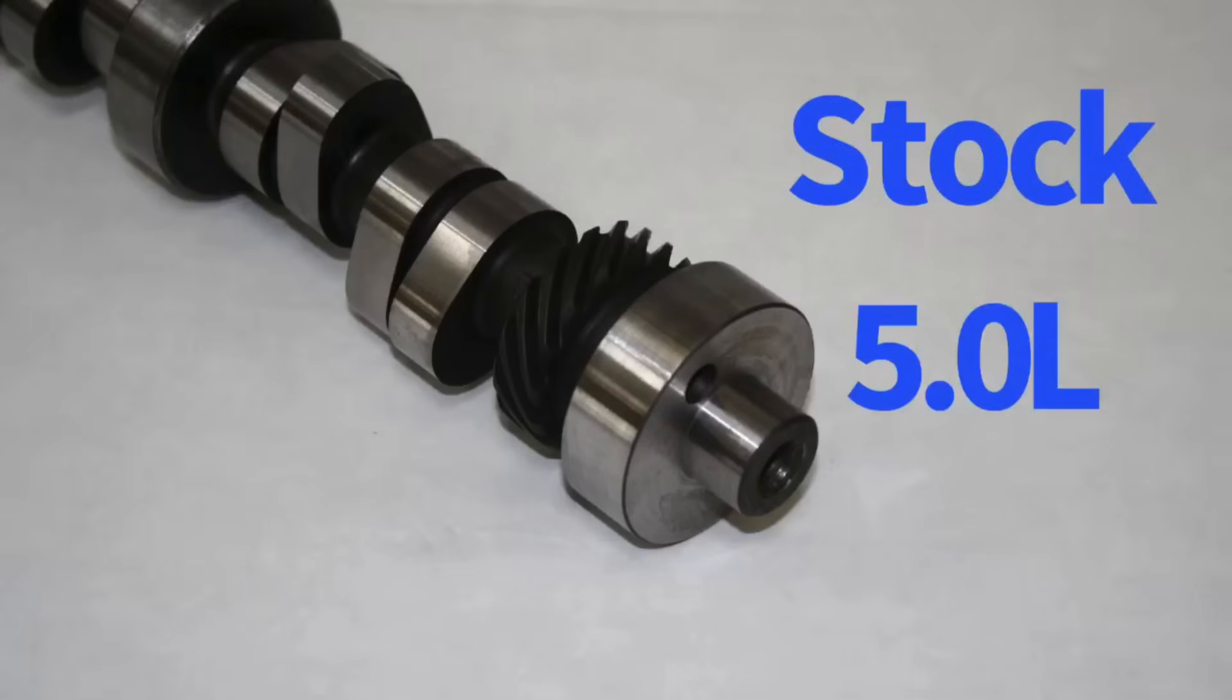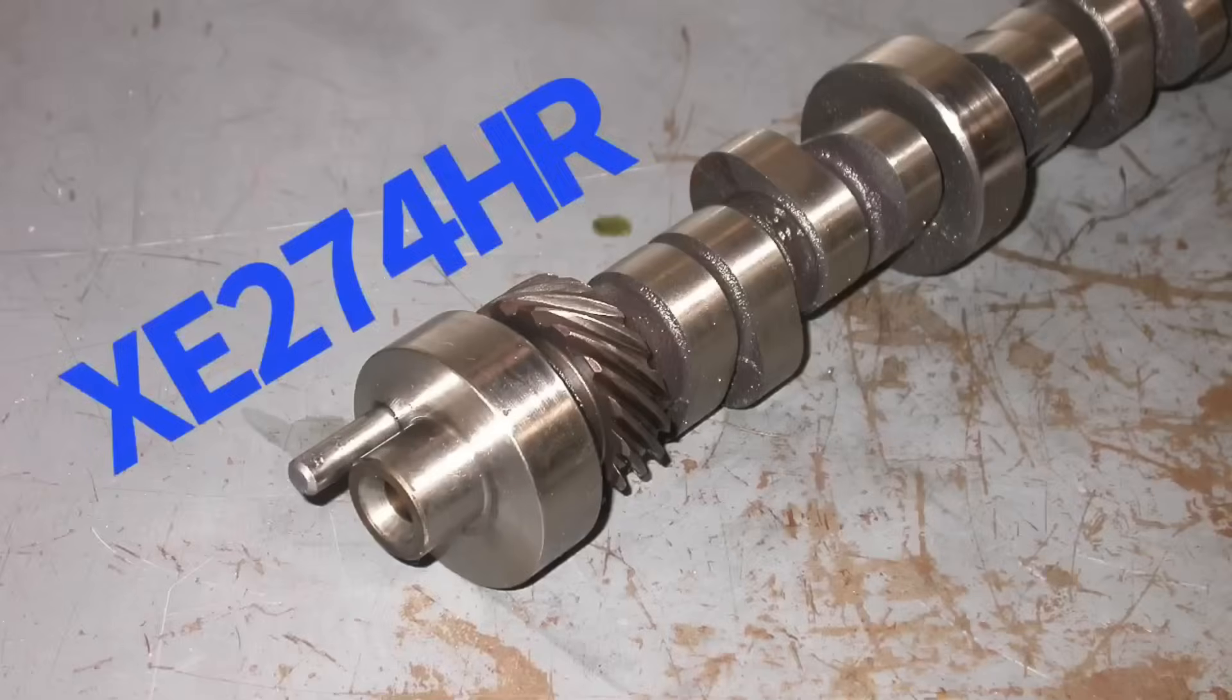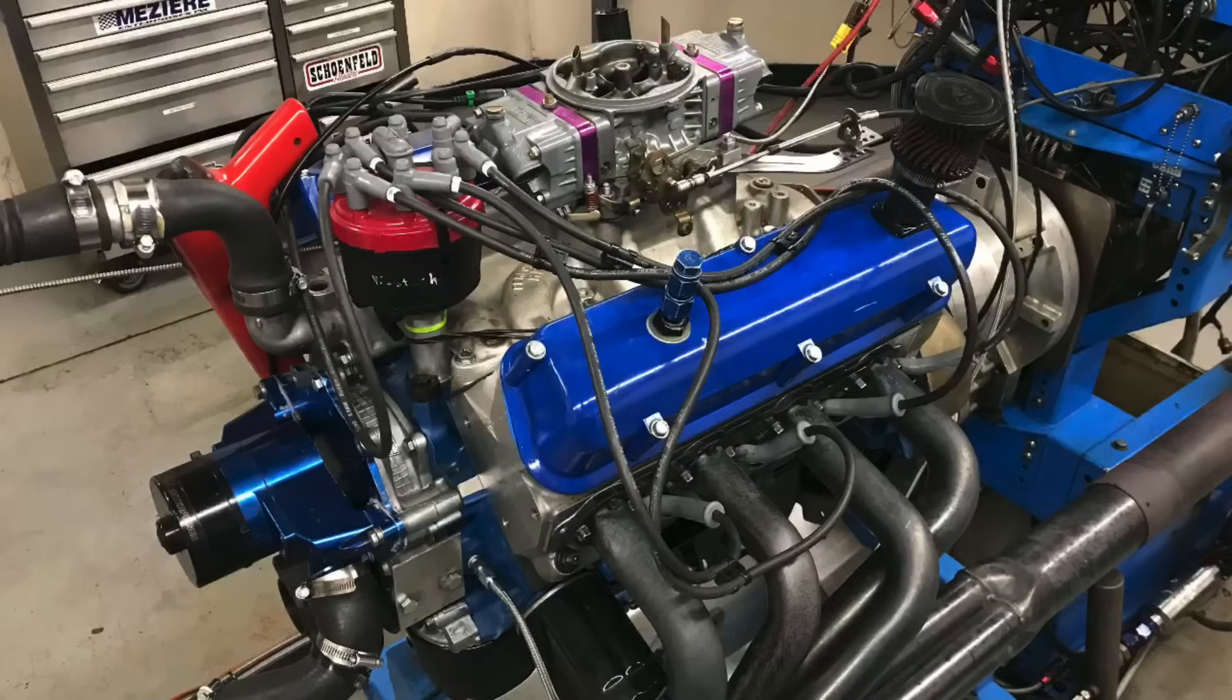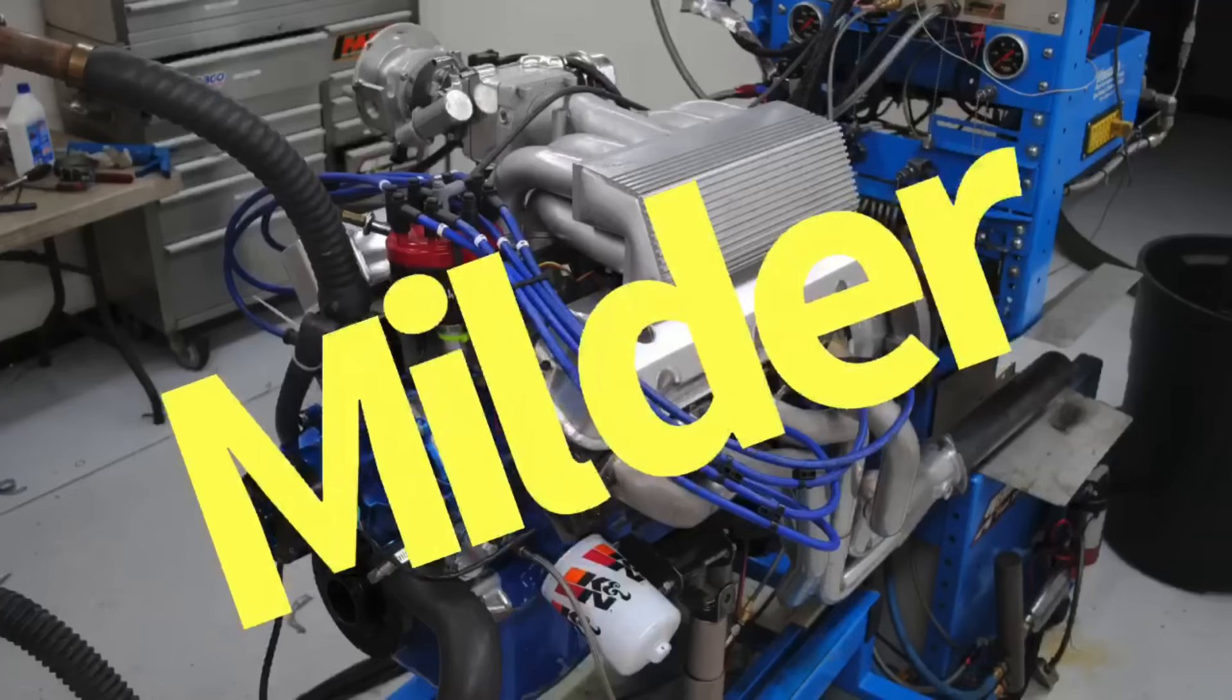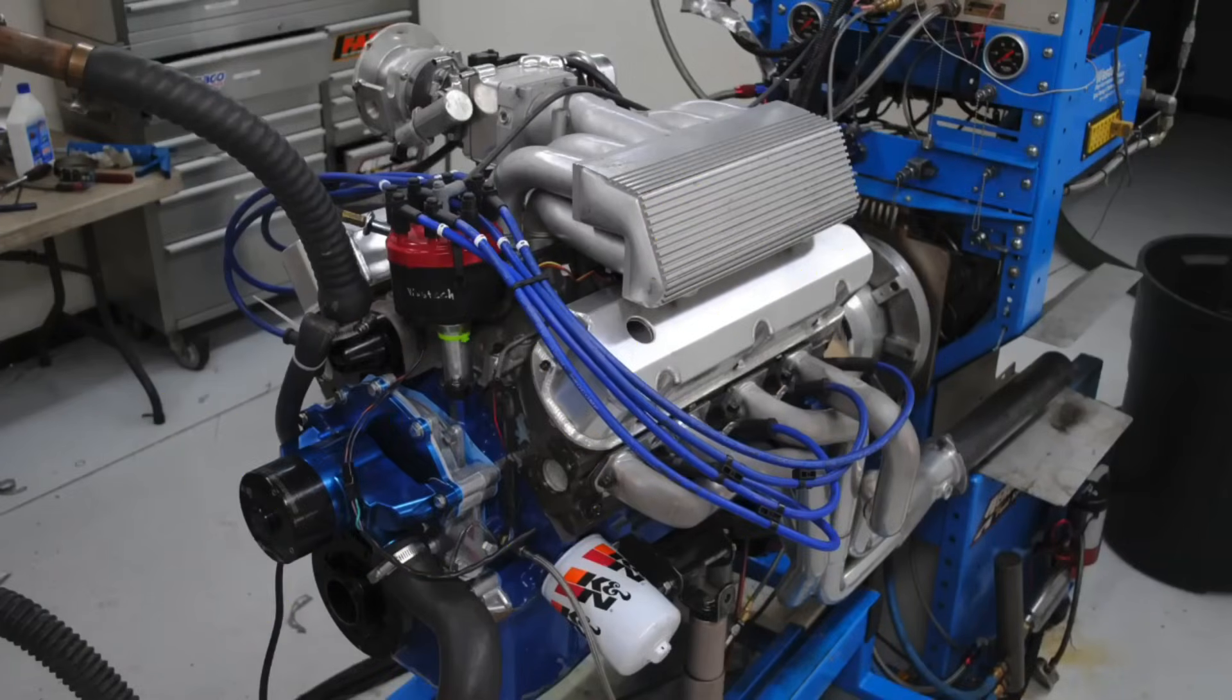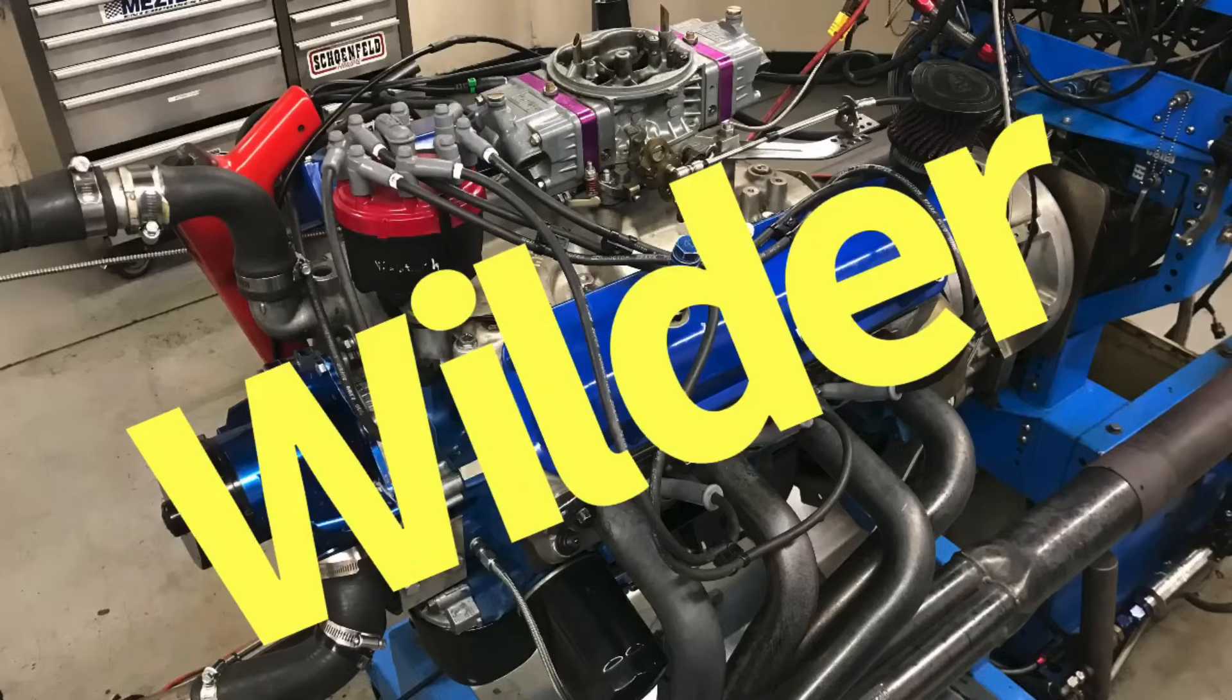In this video, we're going to take a look at a comparison between a factory 5.0L HO cam and an Xtreme Energy 274 cam from CompCams, but not just on one combination. We're going to test it on two different combinations to illustrate the following point: The gains that you get from any camshaft upgrade, whether it's a Ford or Chevy or Dodge import, it doesn't matter. The gains that you get from that camshaft are actually dictated by the combination that you're testing it on. So on a milder combination, the gains might be less than they are on a wilder combination.